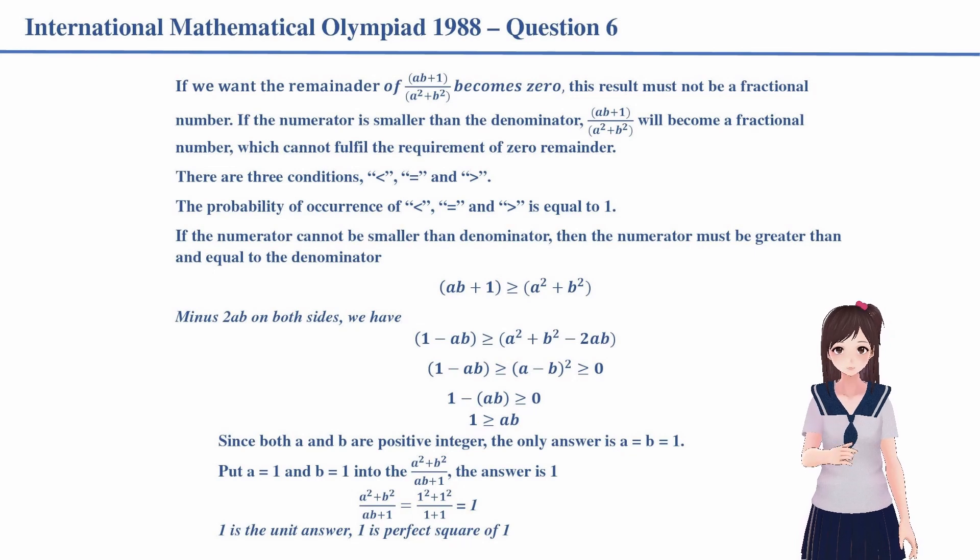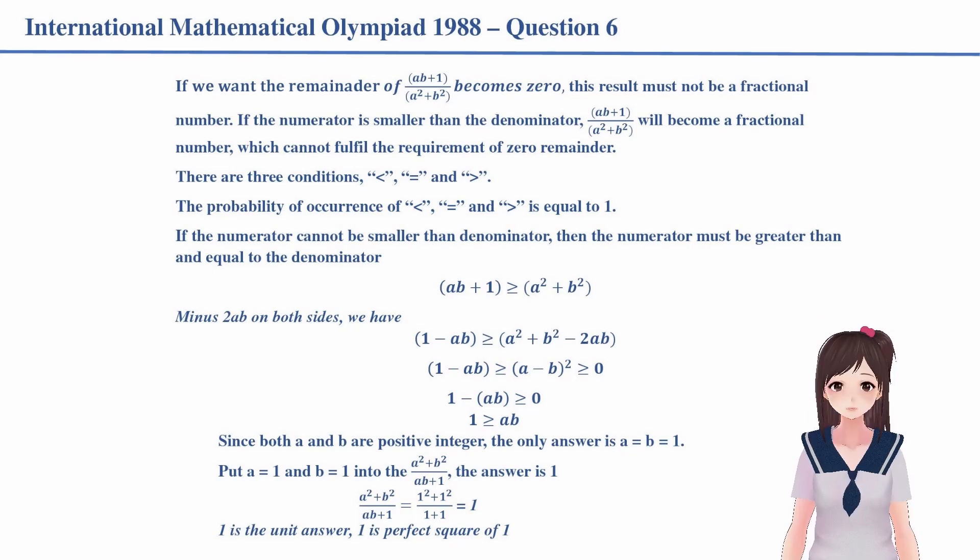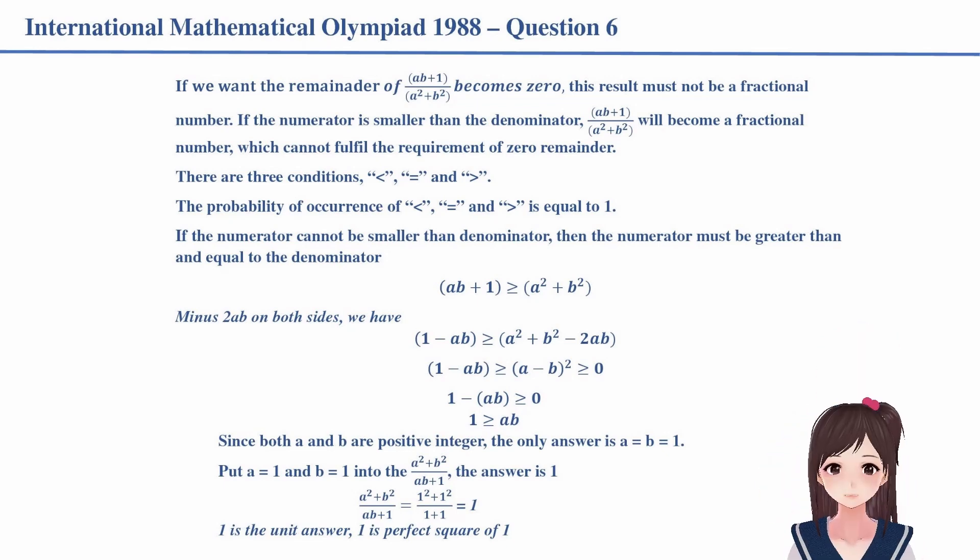Since both A and B are integers, the only solution is A and B are equal to 1. Put A = 1 and B = 1 into (A² + B²)/(AB + 1), we have the answer is 1. 1 is the perfect square of 1. The answer is done. Is it simple enough?